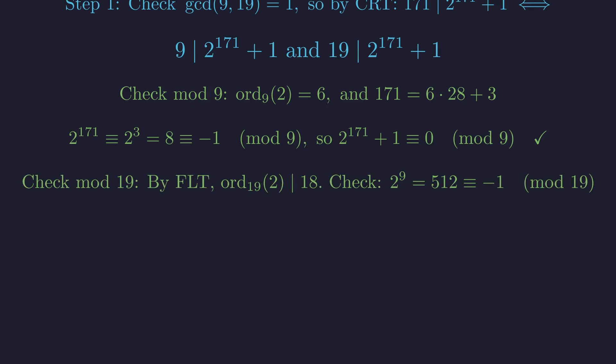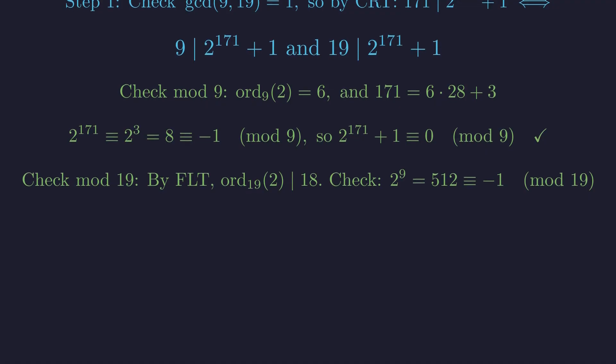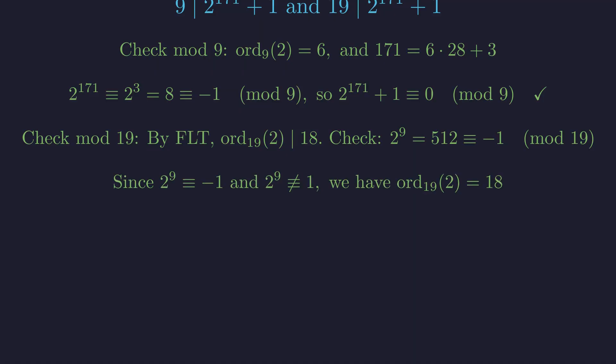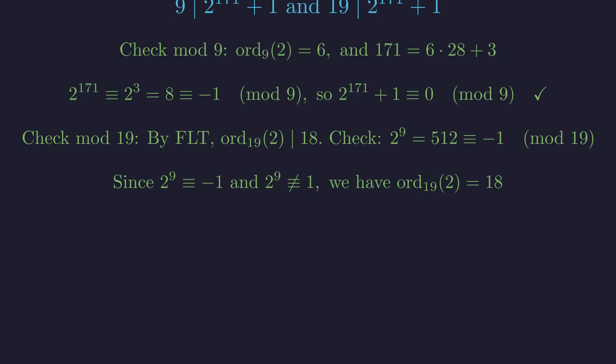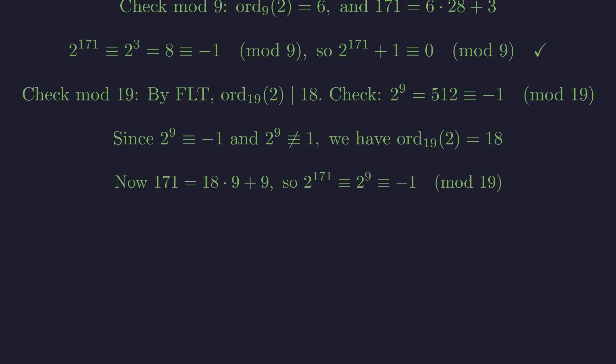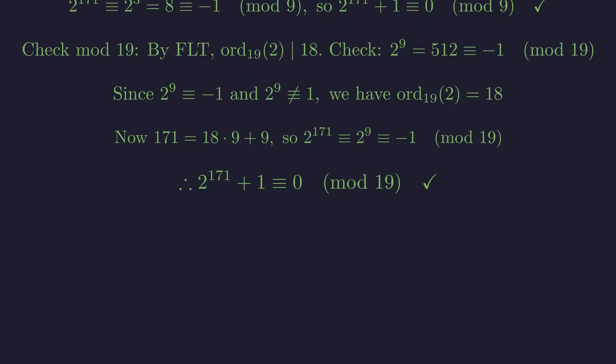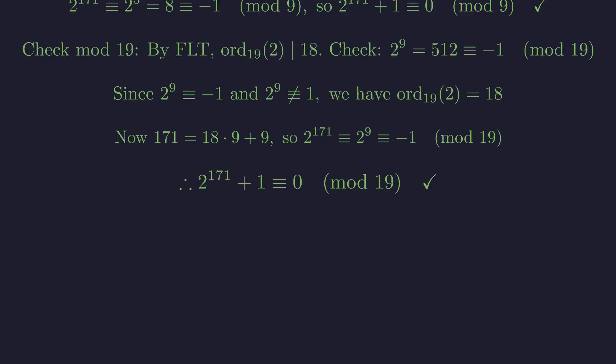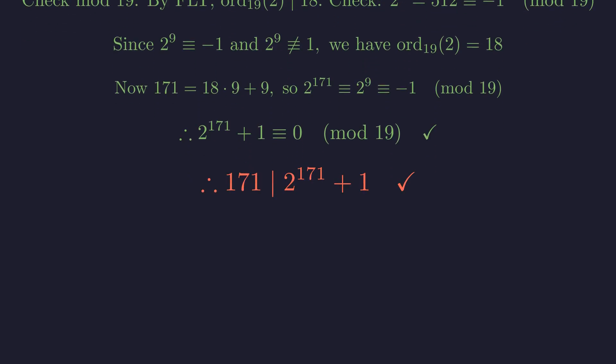Modulo 19. By Fermat's Little Theorem, the order of 2 modulo 19 divides 18. Let's verify. 2 to the 9th equals 512, which is congruent to negative 1 modulo 19. Since 2 to the 9th is congruent to negative 1 but not to 1, the order is exactly 18. Since 171 equals 18 times 9 plus 9, we have 2 to the 171st congruent to 2 to the 9th, which is negative 1 modulo 19. Therefore 19 also divides 2 to the 171st plus 1. Therefore, 171 is indeed a solution. The original conjecture is definitively false.